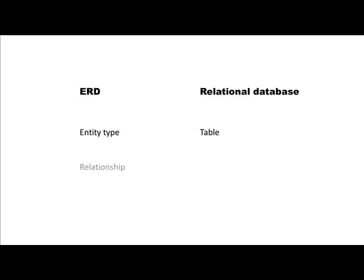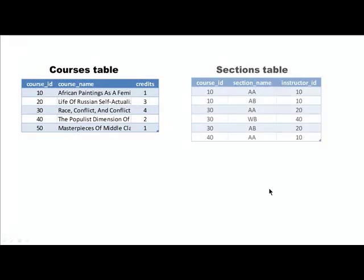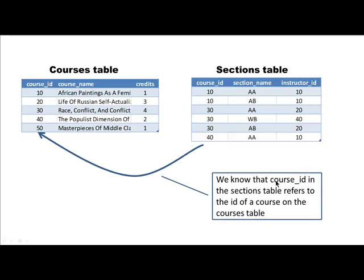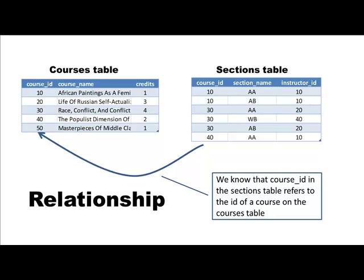Coming back to our mapping: entity types are represented as tables, and relationships are represented in the form of a foreign key in the relational database. Returning to our courses and sections tables, we know that course ID in the sections table is nothing but a foreign key which connects to the course ID in the courses table. This is showing the relationship between courses and sections — a course can have many sections, and every section must be of a particular course.